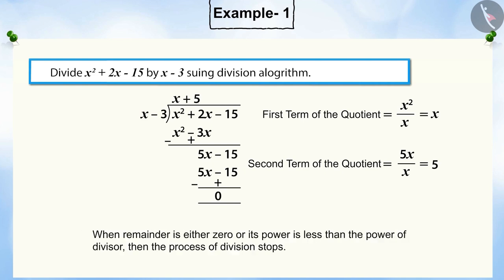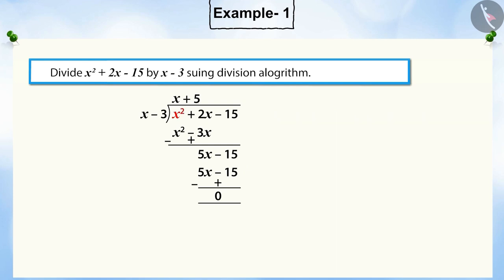You must remember that when the remainder is either 0 or its power becomes less than the power of the divisor, then the division process stops. Hence, the process of dividing ends here. Thus, on dividing x squared plus 2x minus 15 by x minus 3, we get the quotient x plus 5 and the remainder as 0.